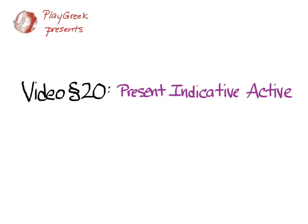This video goes with section 20 of Hanson and Quinn's Greek: An Intensive Course and covers the present indicative active of thematic verbs that end in omega. You can refer to Hanson and Quinn on pages 45 and 46 for their coverage of the material, and they go back to it in the appendix on page 652.